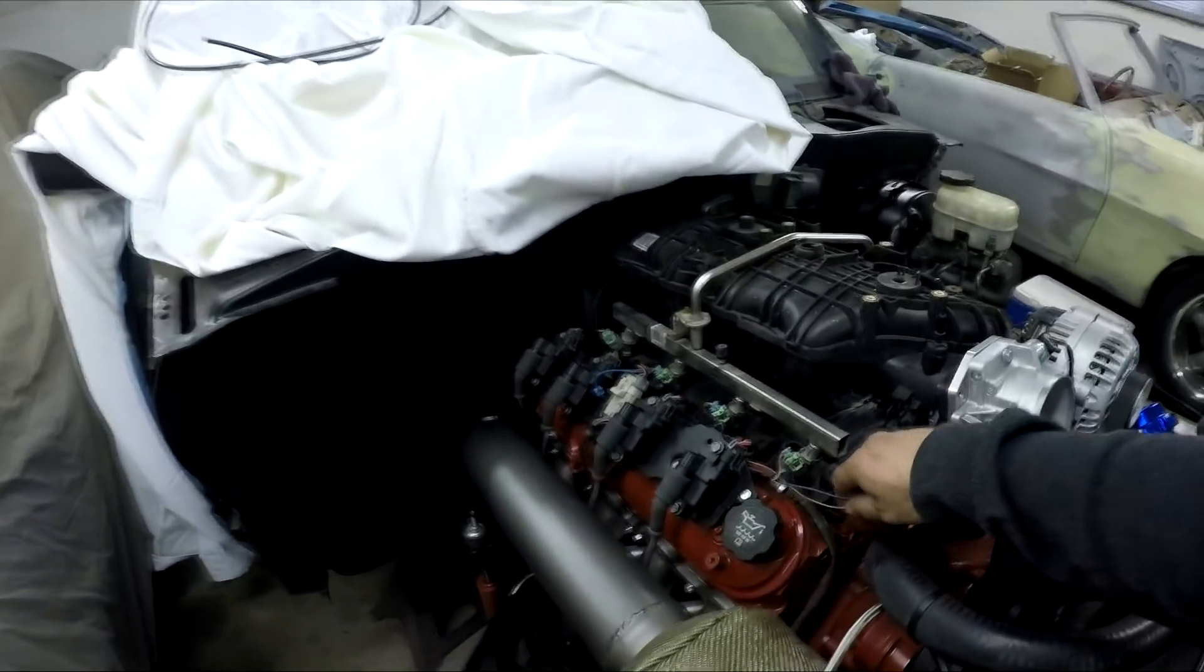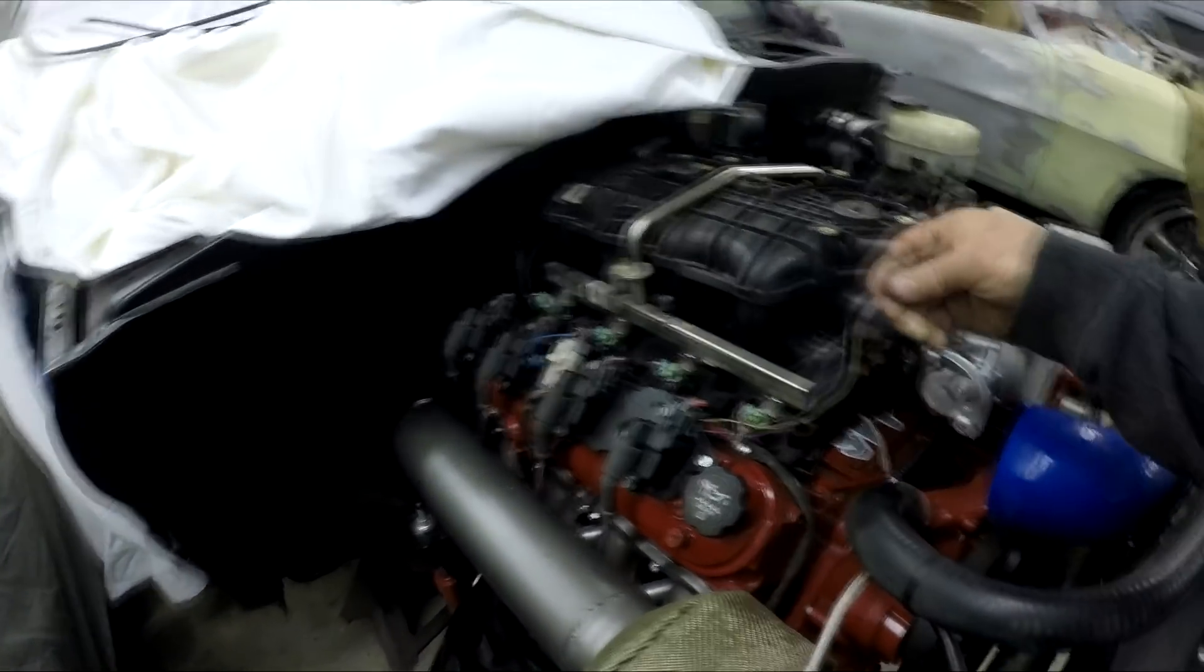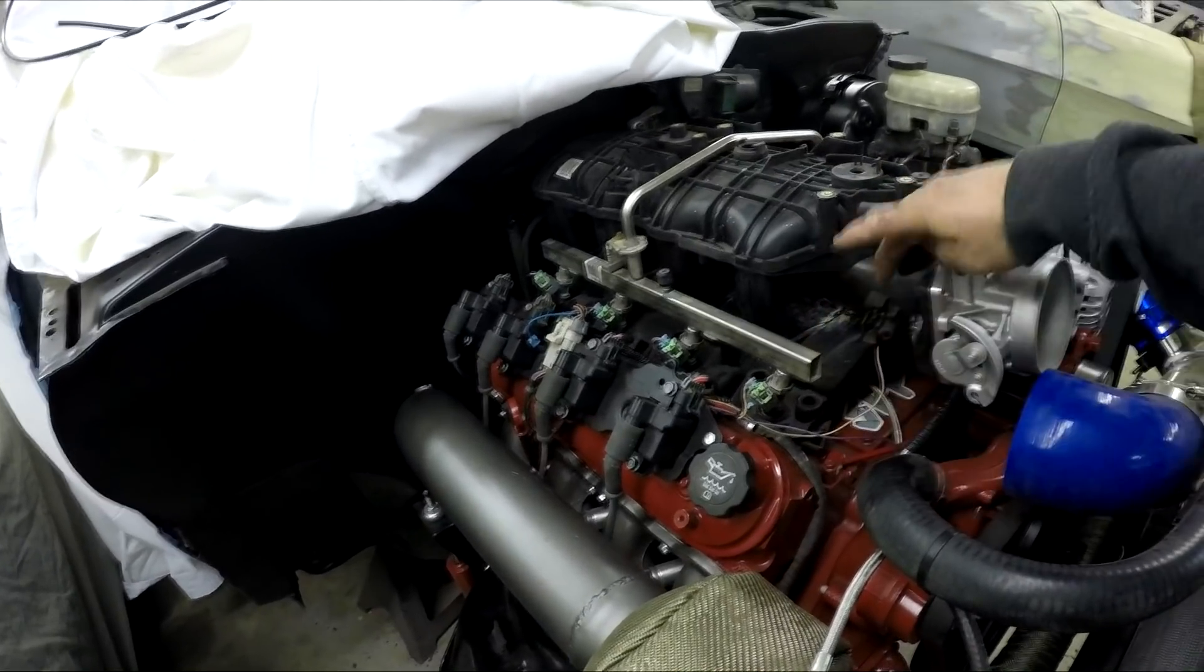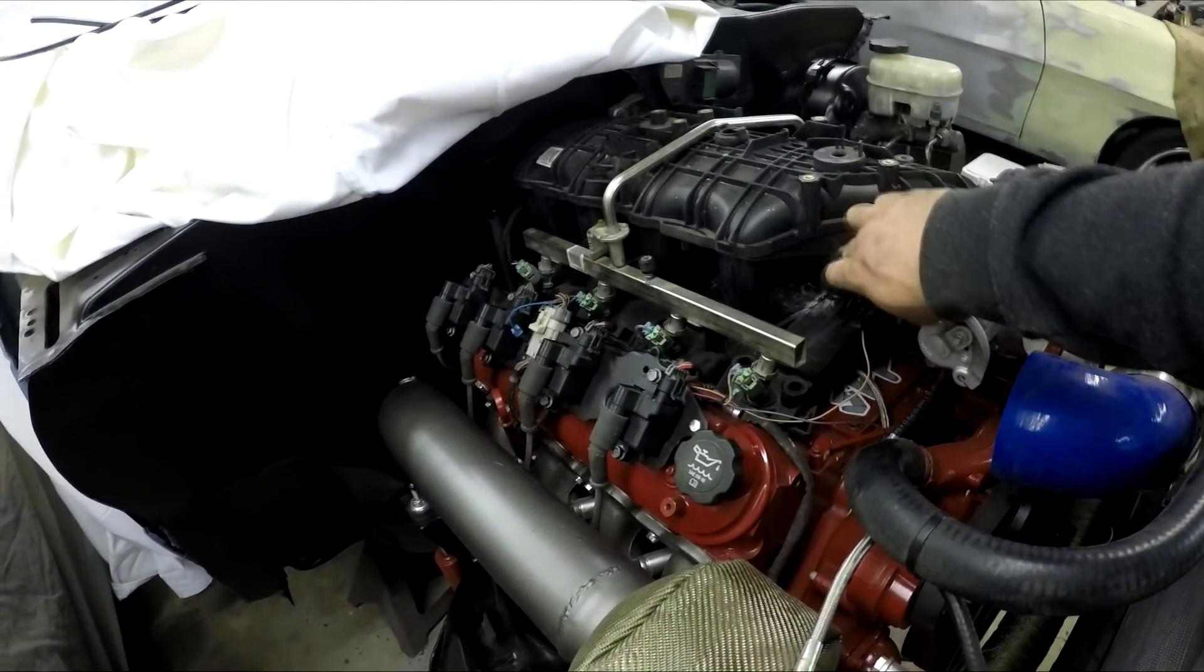Alright so I got the other injector plugs all in, soldered in, everything's in. So pretty much that's almost all of the engine under hood wiring. I still have to hook up the intake air temp sensor, so there's the wires and I'm gonna have to plumb it into the intake here somewhere. Probably drill a hole, put it in there somewhere, so that still has to be done.